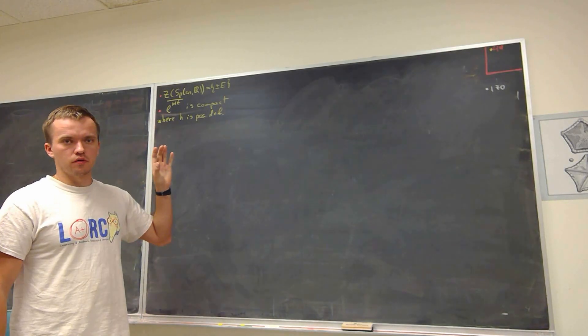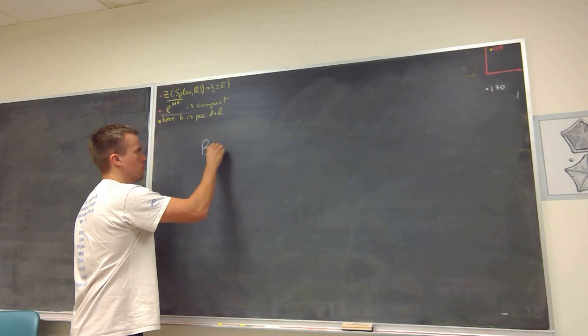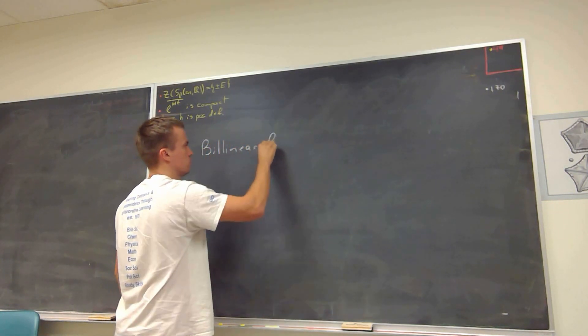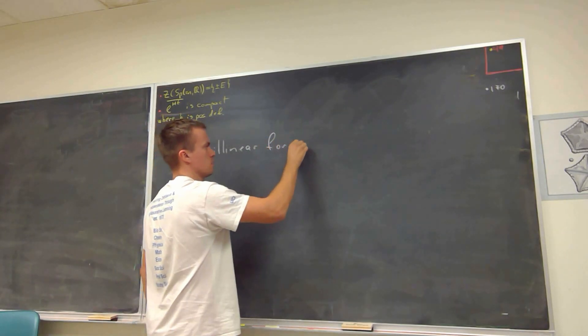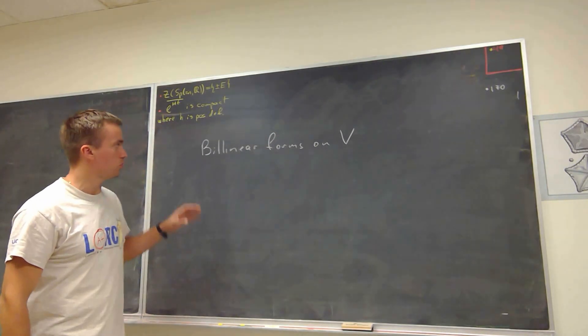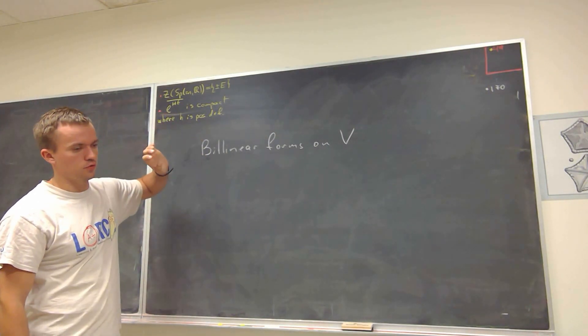Okay guys, so in this video I want to talk about bilinear forms, and we're going to talk about bilinear forms in some vector space V. So we have bilinear forms on V. So what is the idea of a bilinear form? In my previous video I talked about linear functionals, so bilinear form is something different.